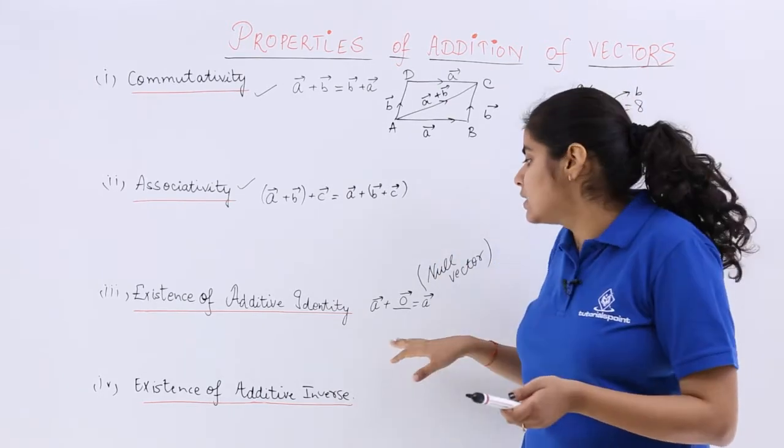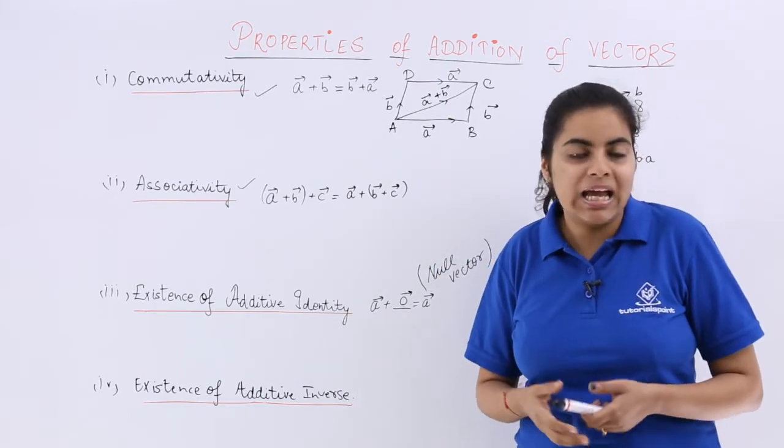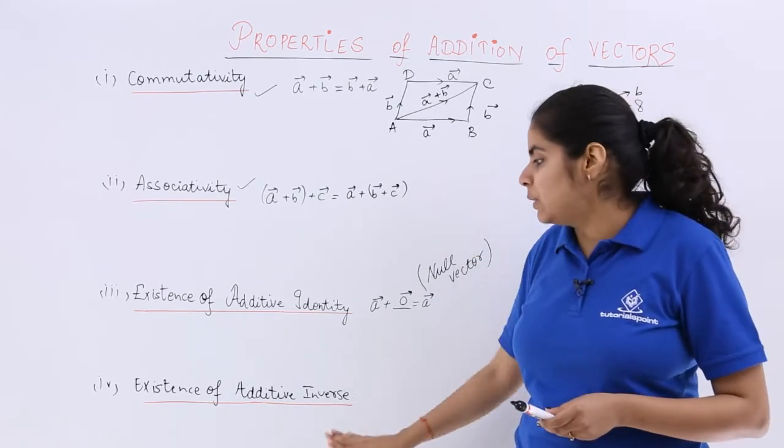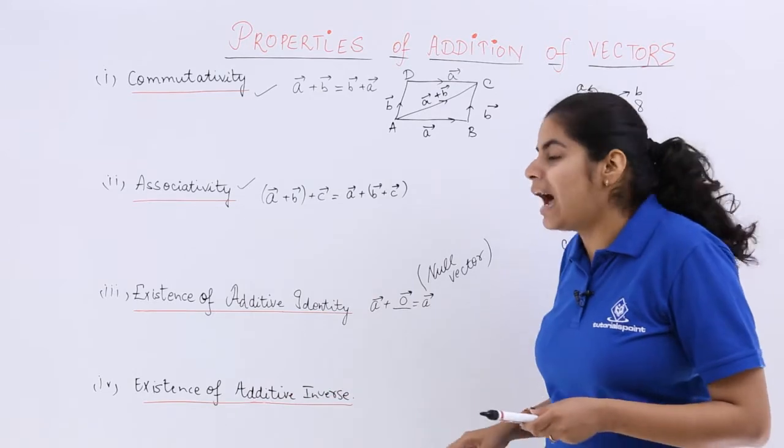The same magnitude will come and direction also you know according to the definition of 0 vector. The last but not the least is existence of additive inverse.